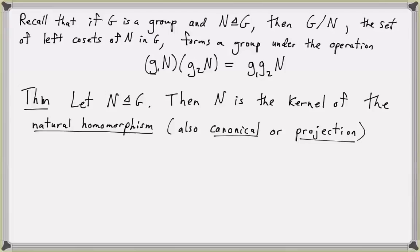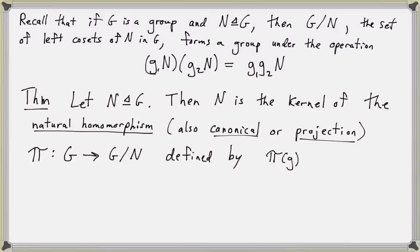So we have this special homomorphism. We're going to give it the name pi, which comes from the word projection. So pi maps from G to G mod N and is defined by pi of g, an element in the group, equals the left coset gN. We just map any element of G to its corresponding left coset gN when N is a normal subgroup.